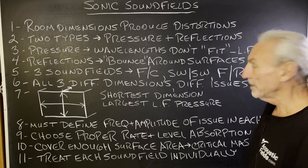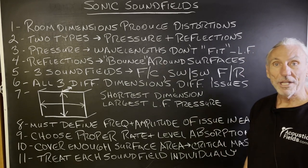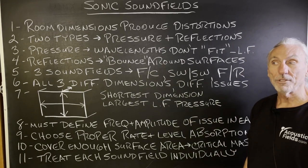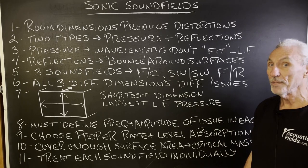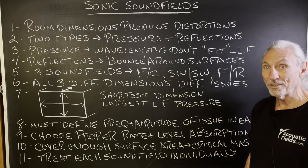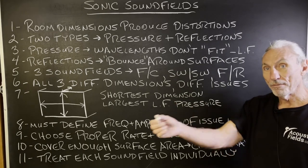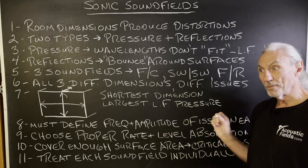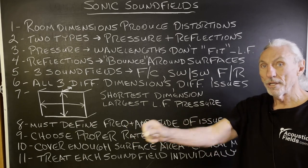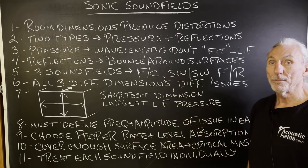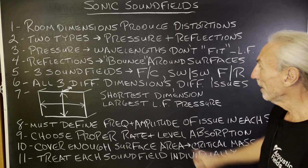Pressure is wavelengths that don't fit. A 30-cycle wave is 34 feet long. If you don't have 34-foot dimensions, it's not going to fit. Some will be reflected back into the room, some will go right through the wall, and some will be absorbed if you use the right technology to do it.